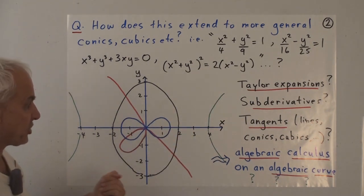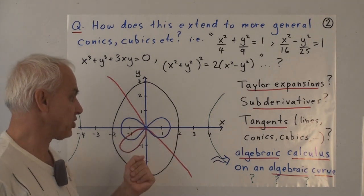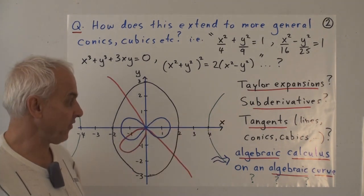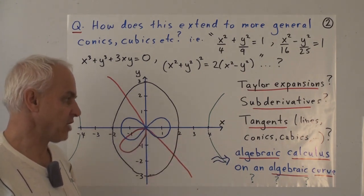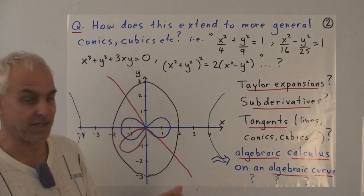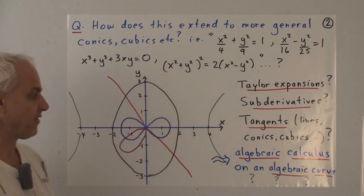So this is another question. Can we calculate Taylor expansions of these things? Does it make sense to talk about sub-derivatives? Can we compute tangents—for example, tangent lines, tangent conics, or maybe tangent cubics even for higher degree such curves?